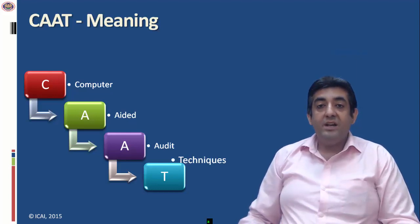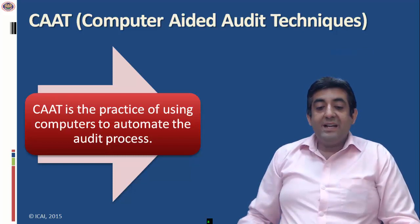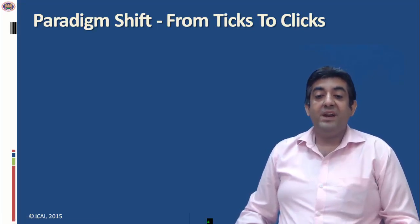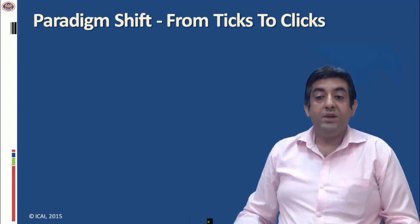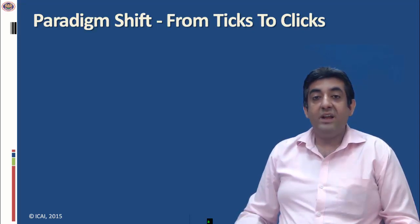CAAT stands for computer aided audit technique. The definition exactly is: computer aided audit technique is the practice of using computers to automate the audit process. In other words, CAAT simply says that we have to automate the audit process and perform the audit on computer-like media. This represents a paradigm shift from an era of tick to click — earlier audits were performed using a pencil or paper, but now using a computer with clicking operations using a mouse.